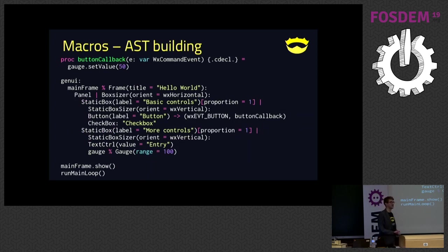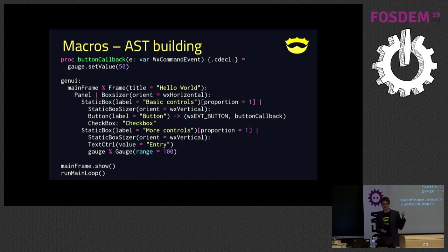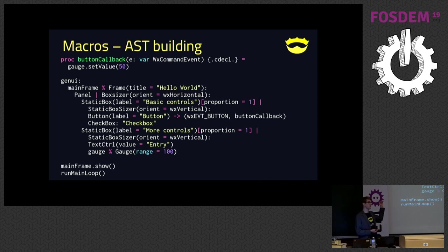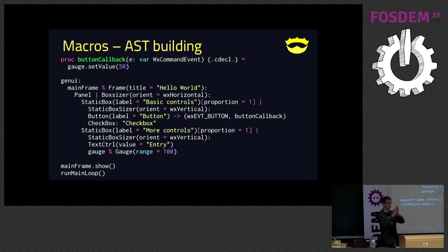A more complicated example — actually one of my first projects using macros. This is a macro that generates a user interface for wxWidgets. Here you can see I'm using the hierarchical structure of an indented language. We have two static boxes in a box sizer that is horizontally laid out, with items vertically laid out. We can see we have buttons and check boxes.